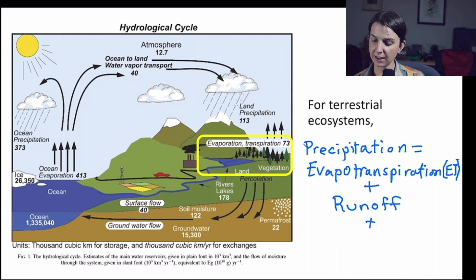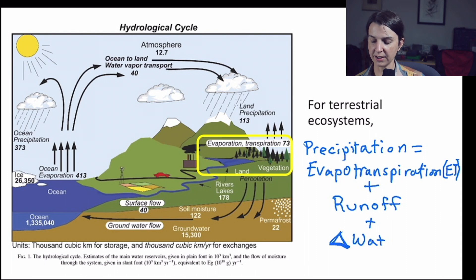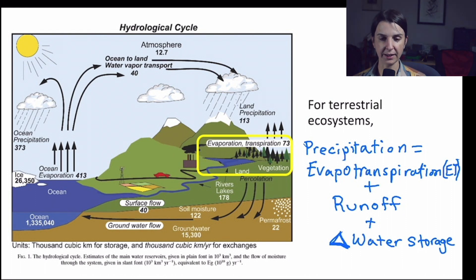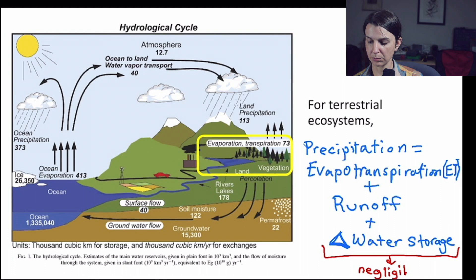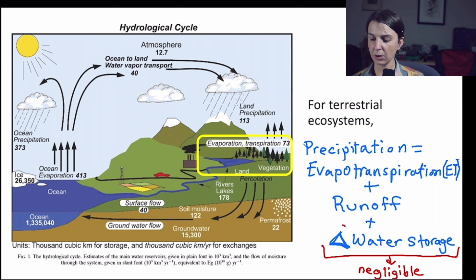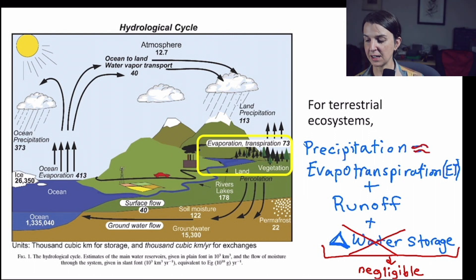There's also anything that gets added to water storage — the change in water storage, written as delta — meaning how much is being stored by the ecosystem. It turns out that this term is generally pretty small and on an annual basis is often negligible, so we can often just ignore it. In that case, precipitation is approximately equal to evapotranspiration plus runoff.